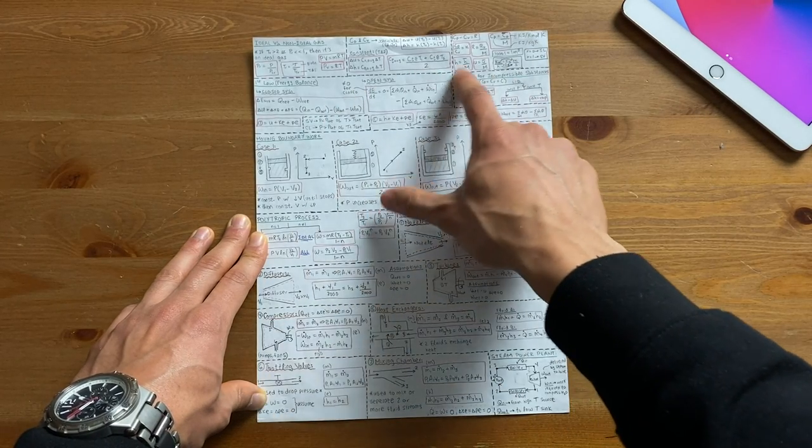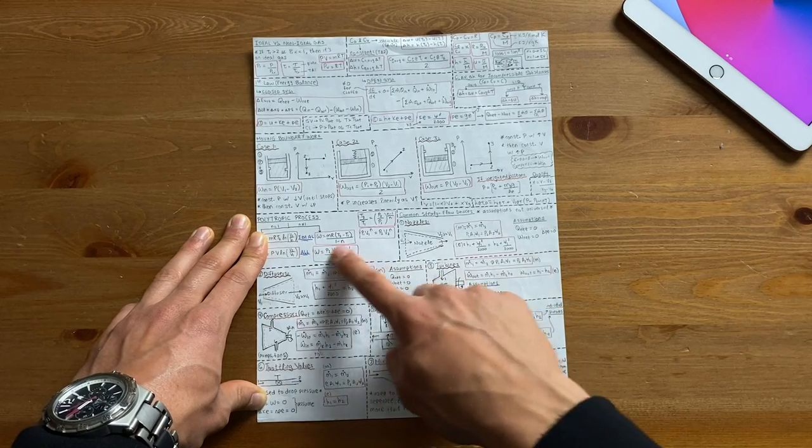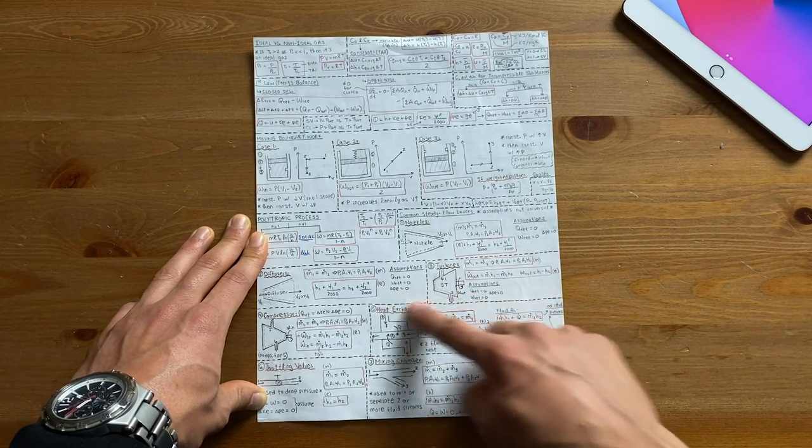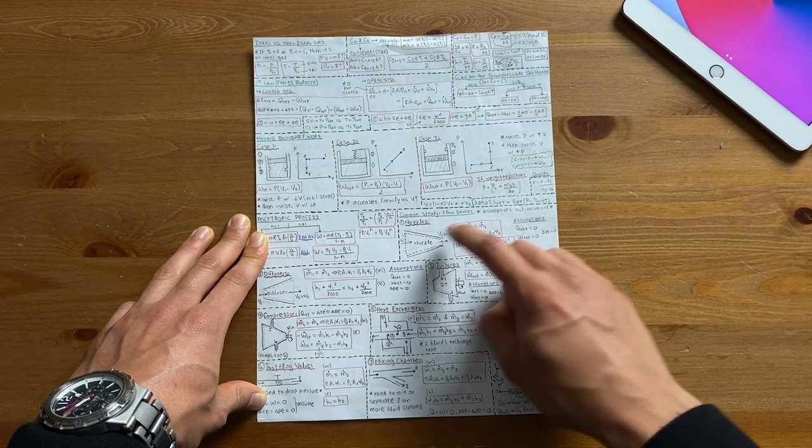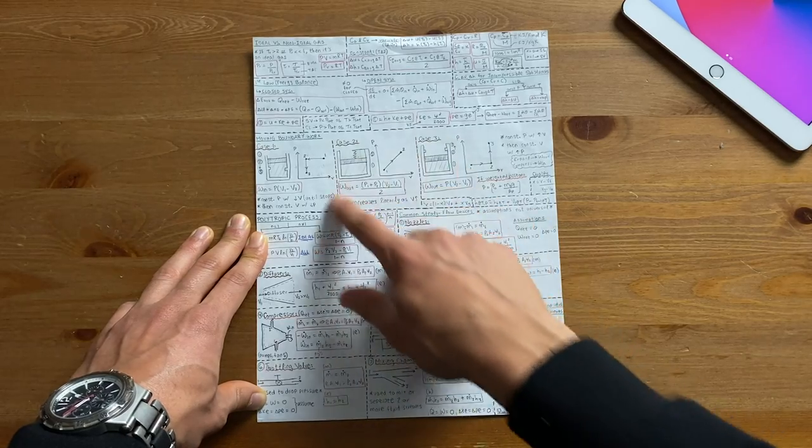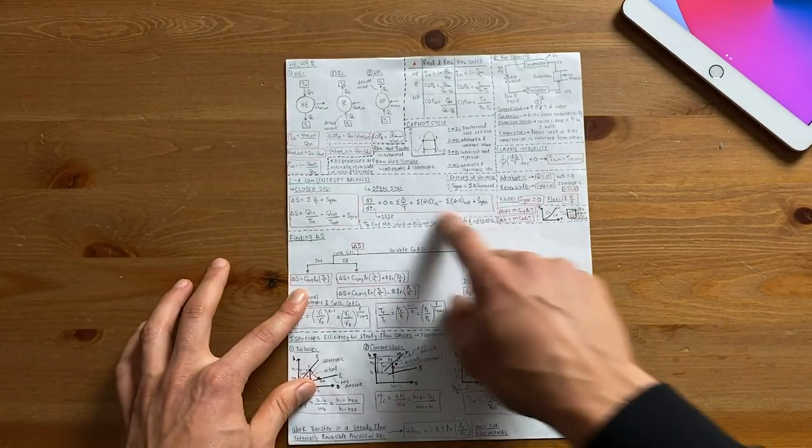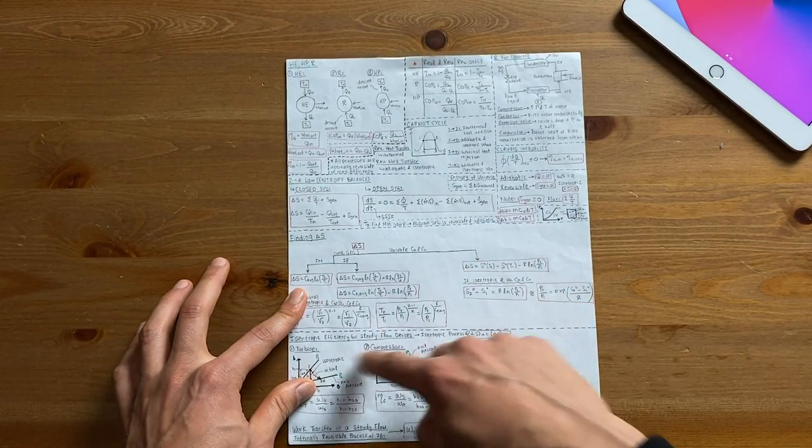I boxed all the important equations in red, divided each section into blocks with color dashed lines. I also have diagrams as you can see here and flowcharts as you can see here because I find visuals help me learn better.